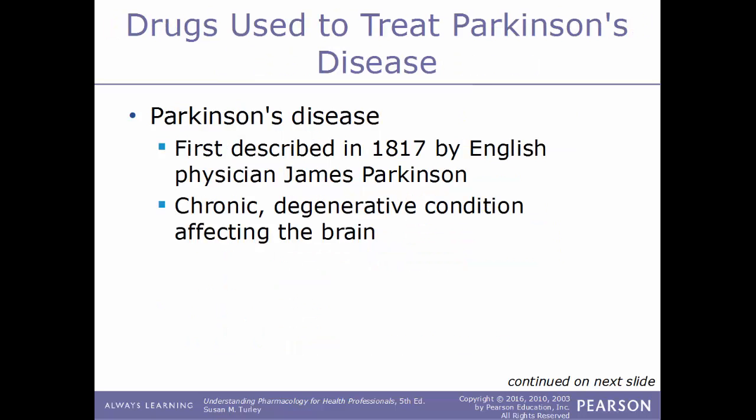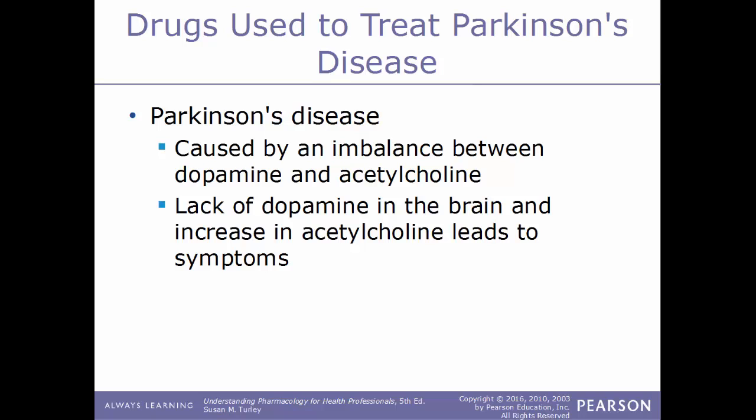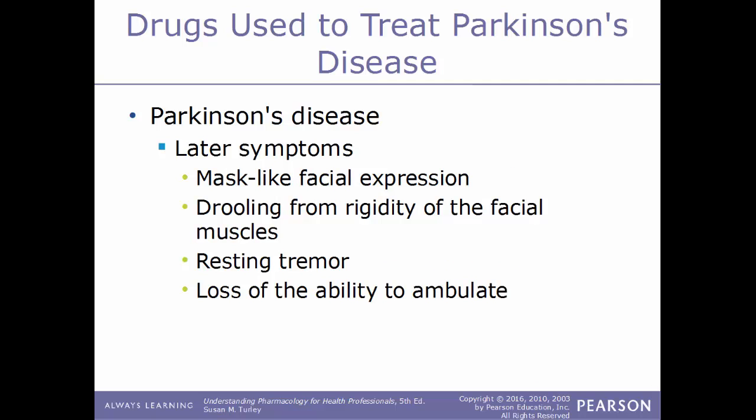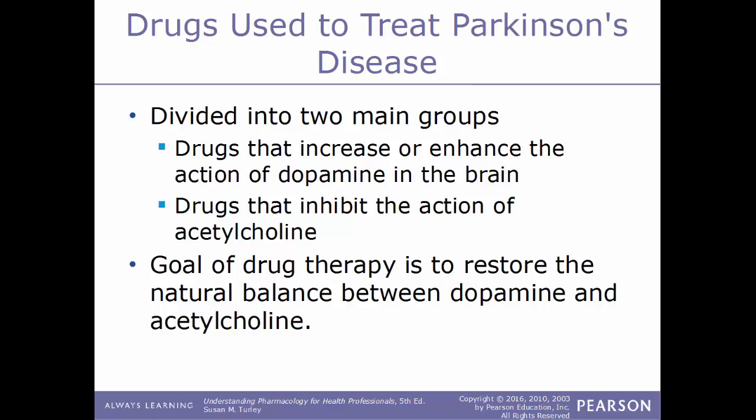Parkinson's disease was first described in 1817 by English doctor James Parkinson. It's a chronic degenerative condition caused by an imbalance between dopamine and acetylcholine — specifically, a lack of dopamine and increased acetylcholine levels. Early symptoms include muscle rigidity, tremors, and slowing of voluntary movements. Later symptoms include a mask-like facial expression, drooling, resting tremors, and loss of the ability to walk. Drugs used to treat Parkinson's either increase dopamine action in the brain or inhibit acetylcholine action, with the goal of restoring the natural balance between these two.